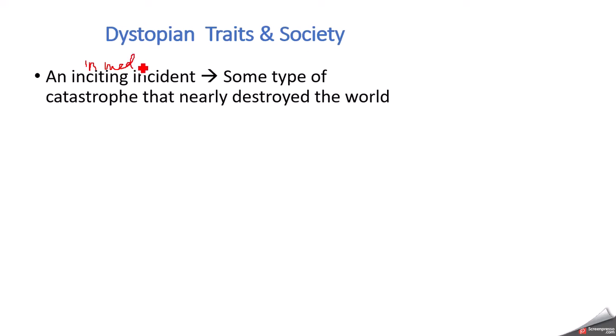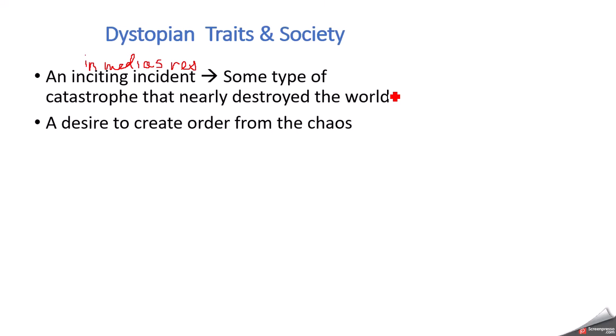This is called 'in medias res,' which means 'in the middle of things.' Most dystopian books pick up in the middle — we don't see the inciting incident or the catastrophe that destroyed the world. Sometimes we don't even really know exactly what happened, but there are hints. Memory and history have been somewhat erased, but we know that something happened. In response to that disaster, there was a desire to create order from the chaos.